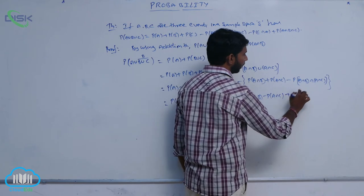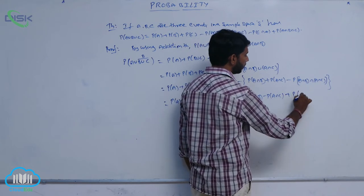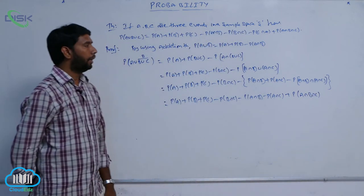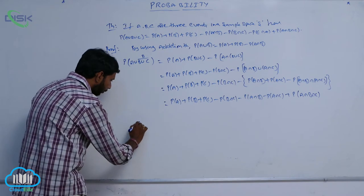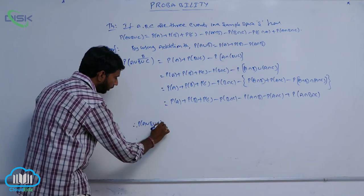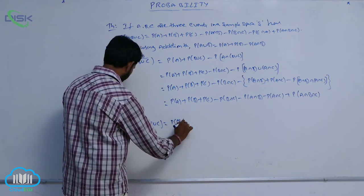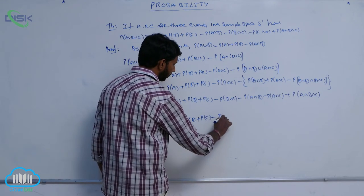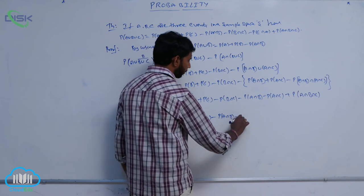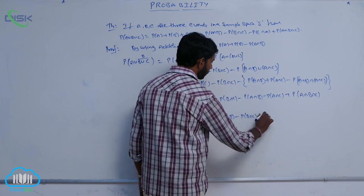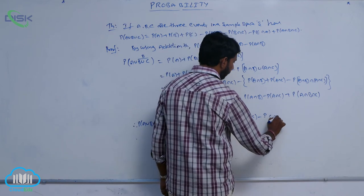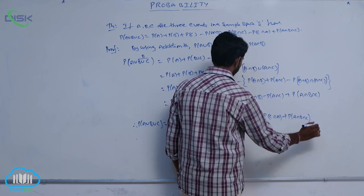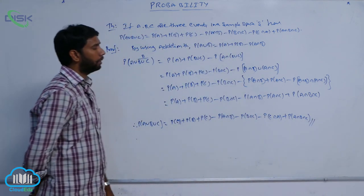Here minus of minus gives plus. And A intersection B intersection A intersection C simplifies to A intersection B intersection C. Therefore, P of A union B union C is equal to P of A plus P of B plus P of C minus P of A intersection B minus P of B intersection C minus P of C intersection A plus P of A intersection B intersection C.